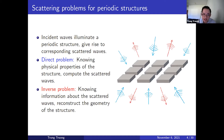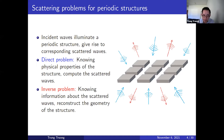Our problem is based on the scattering phenomenon in which we use some incident waves to illuminate a periodic structure. The interaction between these waves and the structure gives rise to corresponding scattered waves. The direct problem would be: we know the physical properties of the structure and we try to compute the scattered waves. The inverse problem, on the other hand, is when we know some information about the scattered waves and we try to reconstruct the geometry of the structure.